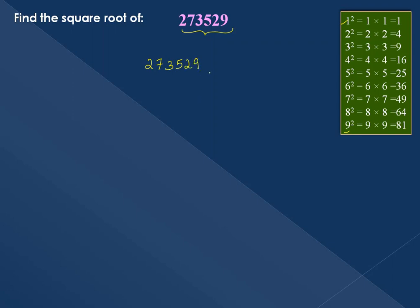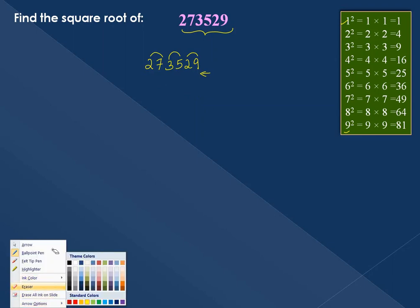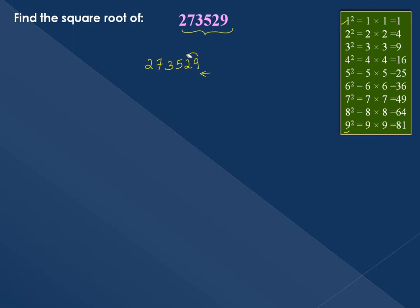The first step is to make pairs. Starting from the right side of the number, make pairs or groups. The pairs are: 29, 35, and 27. We group the digits in pairs from right to left, so we have three pairs to use: 27, 35, 29.